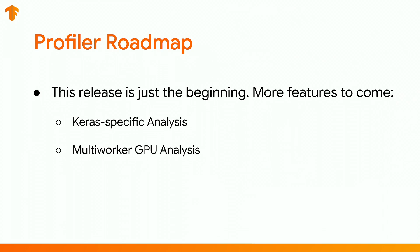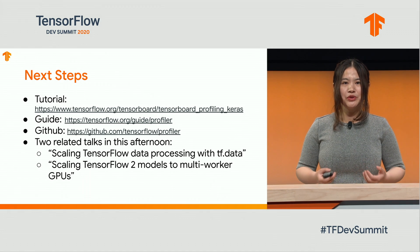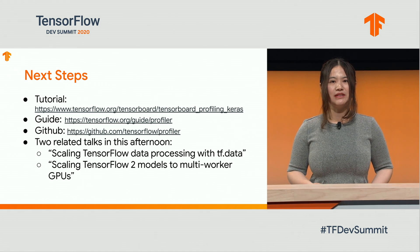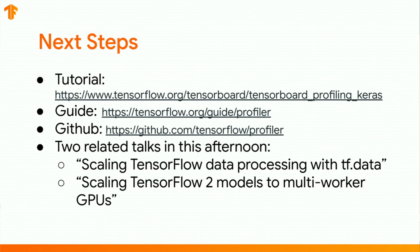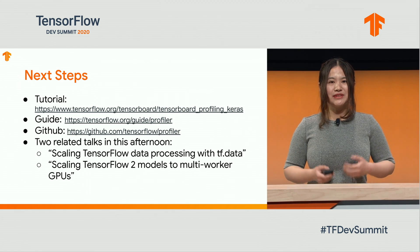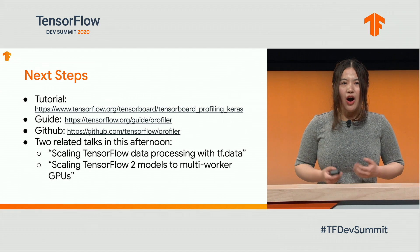This release is just the beginning, and we have more features upcoming. We are working on Keras-specific analysis and multi-worker GPU analysis — stay tuned. We also welcome your feedback, so please let us know and contribute your ideas. TensorFlow 2 Profiler is the tool you need for investigating TF2 performance. It works on CPU, GPU, and TPU. Here are more things to read: a tutorial, guide, and GitHub source code. There are also two more related talks on performance tuning this afternoon — they are super exciting, so don't miss them. Finally, I want to thank everyone who worked on this project. You are all super amazing teammates.